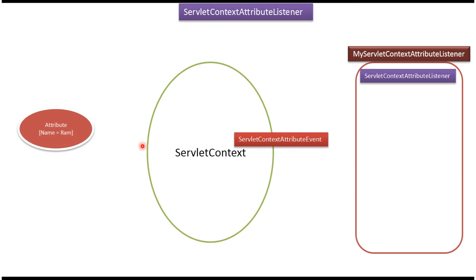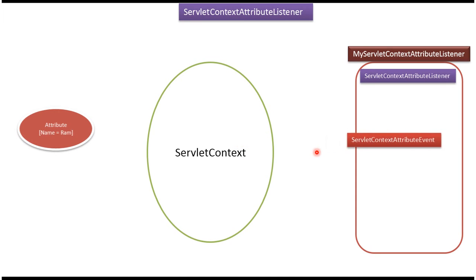The event is called surlott-contact-attribute-event. We can listen to this event using a listener. Here you can see my surlott-contact-attribute listener which implements the surlott-contact-attribute listener interface. Whenever the surlott-contact-attribute event occurs, we can listen to it using this listener.